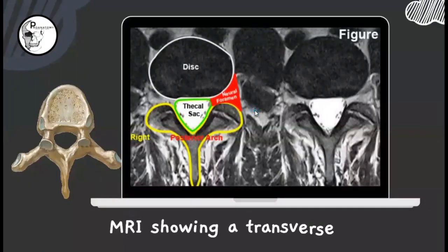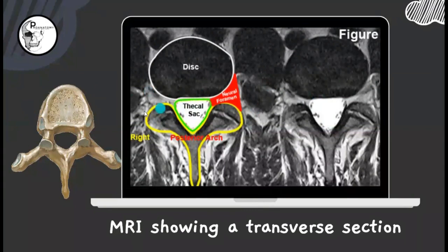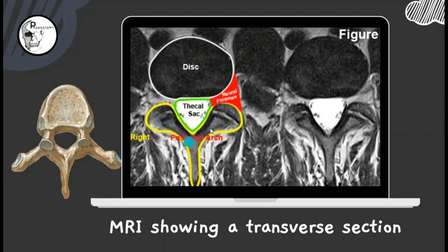Now let's look at an MRI transverse section of the spinal cord. Here you can clearly see the body of the vertebra, the posterior neural arch, the posterior spinous process, and in between, the vertebral foramen marked with colored lines for a better view. The body is covered by the intervertebral disc. The green colored area is the thecal sac — the outer lining of the vertebral foramen — with the spinal cord inside. The red marked area represents the neural foramen through which the spinal nerve roots emerge.